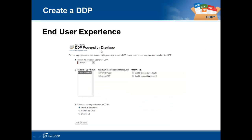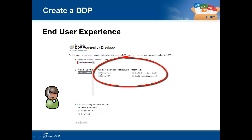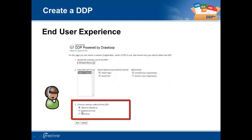Once the DDP record is created by the admin, the end user can then leverage that record on the Loop Plus page. The Loop Plus page will request a contact to be both the recipient of any emails that are sent, as well as the contact whose information is merged into the template files. The user may also check off any optional documents to include in their output file, and finally the method they want to leverage for delivery.